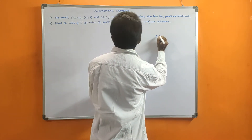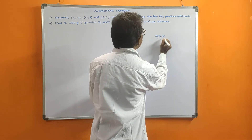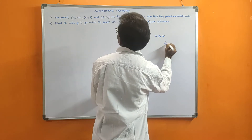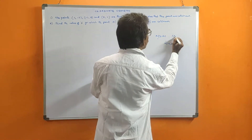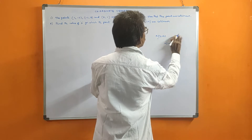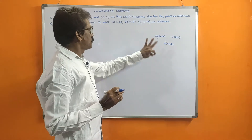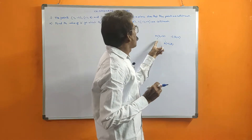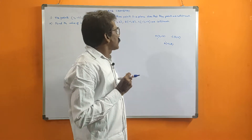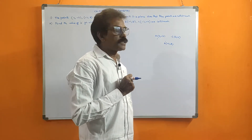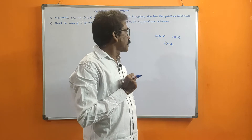Suppose the three points are A(3, -2), B(-2, 8), and C(0, 4). What is asked is: show that these three points are collinear. For this, the condition is the sum of any two sides should be equal to the third side. Then the points are collinear. That is one method.